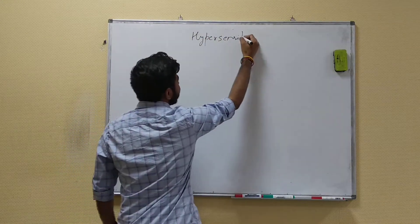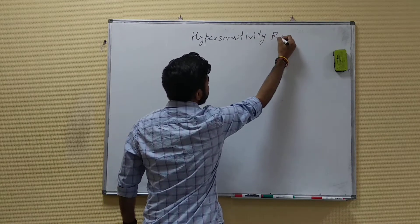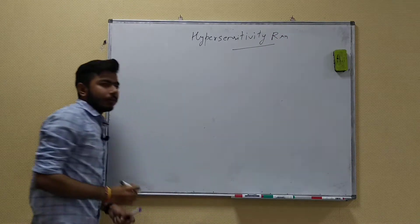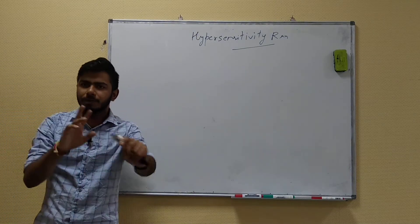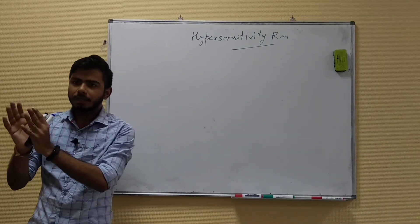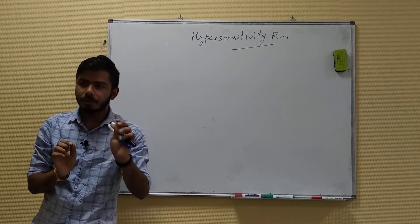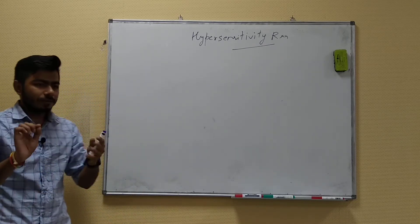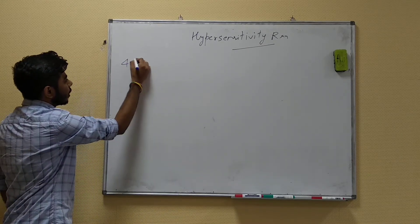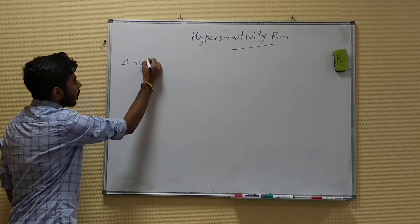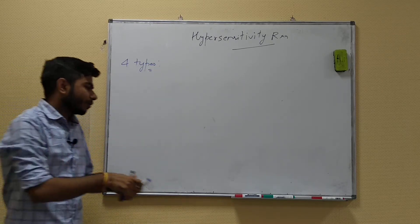We have five kinds of hypersensitivity reactions, but usually we don't talk about the fifth type. Type 5 hypersensitivity is quite similar to type 2 hypersensitivity — I will be talking about that difference. So mainly we will be talking about hypersensitivity as four types.